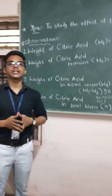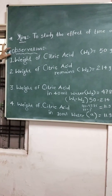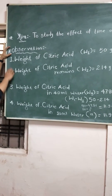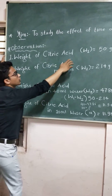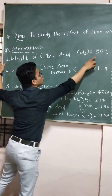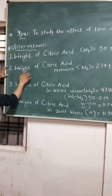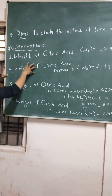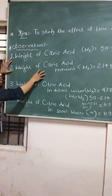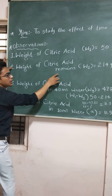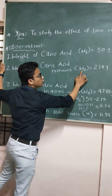Observation: the observation table records the weight of citric acid crystals obtained from the saturated solution at each time interval.